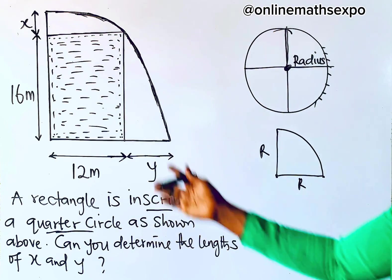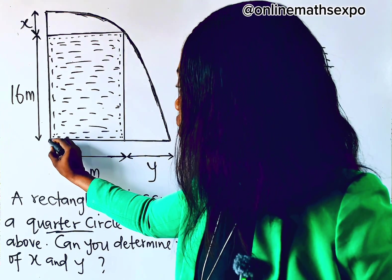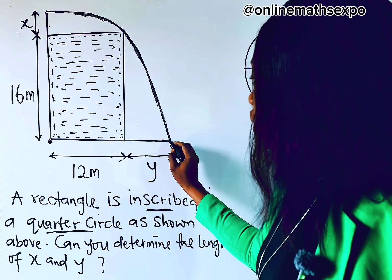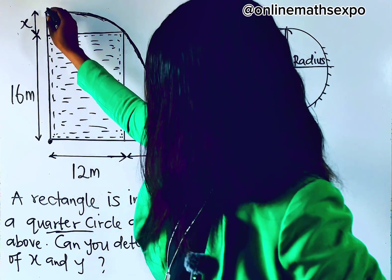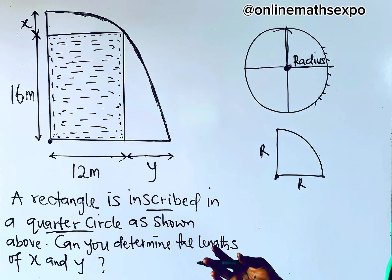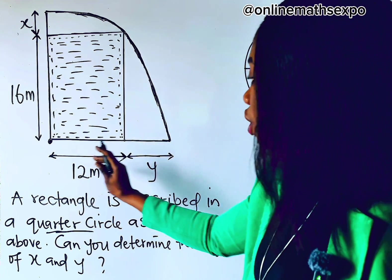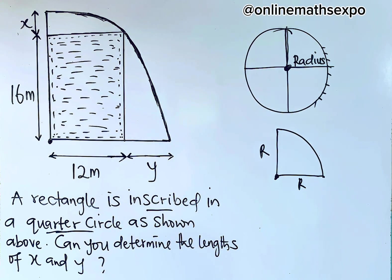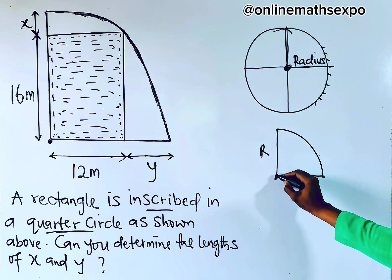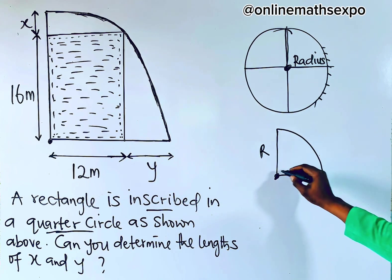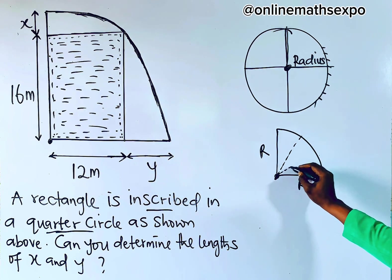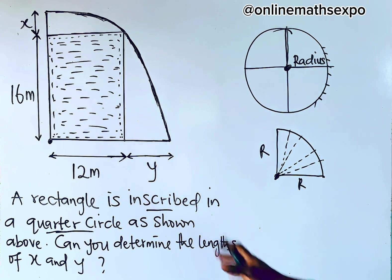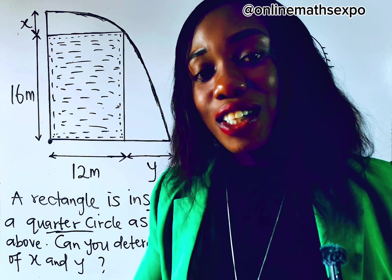Looking at this diagram, this is the center of the circle. The line from the center touching this point is the radius, and from here to this end is also the radius. So if you get the radius, you can easily get y and x. You can also draw a line from the center to any point on the circumference — you can draw as many radius lines as you wish.